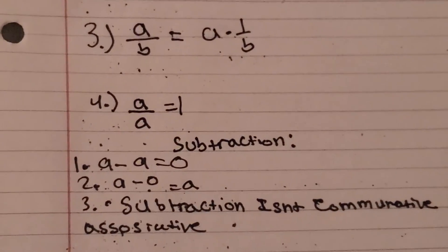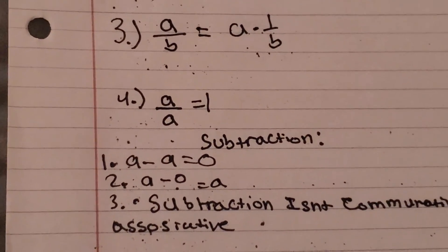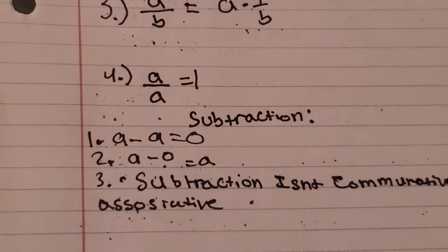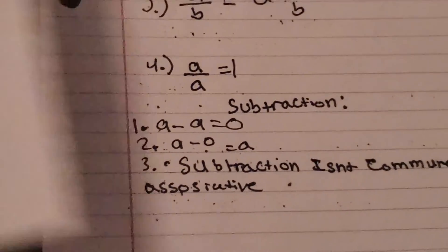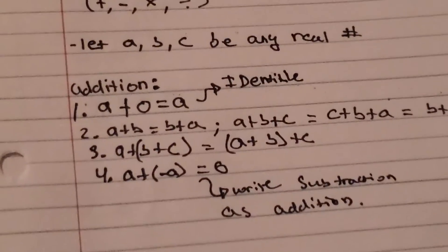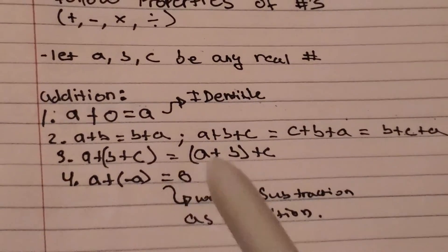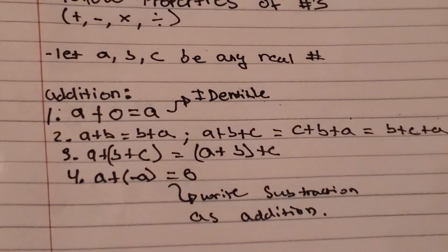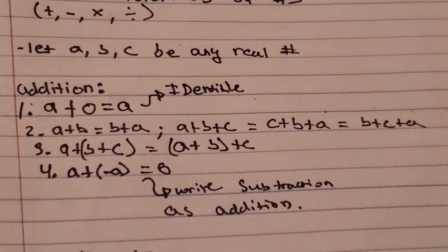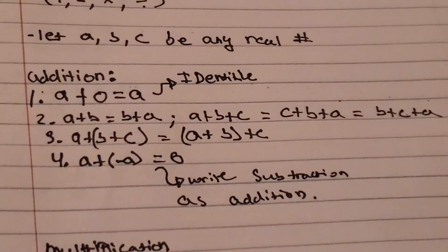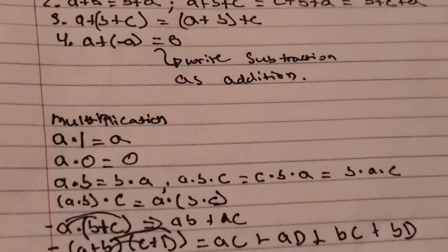Sorry for the weird cut, guys. What I was trying to say is that subtraction isn't commutative or associative. With addition and multiplication, you can add or multiply numbers in any order, and with grouping symbols you can move them around freely. But with subtraction and division, it doesn't work that way. With that being said, we'll see you guys in the next video.